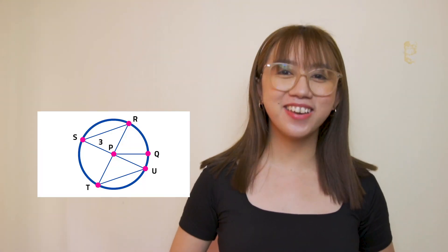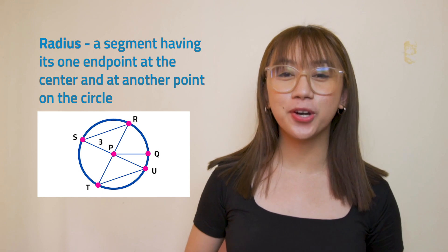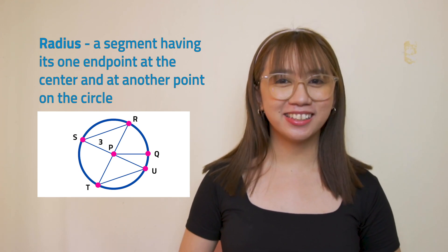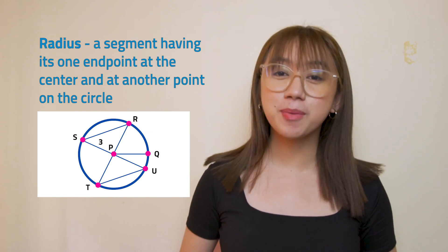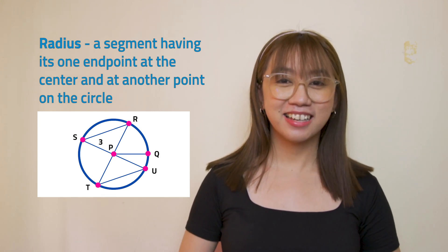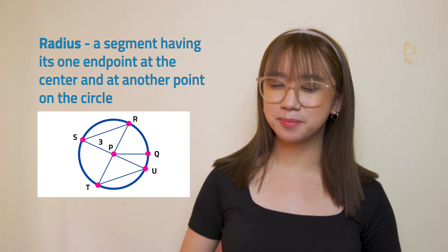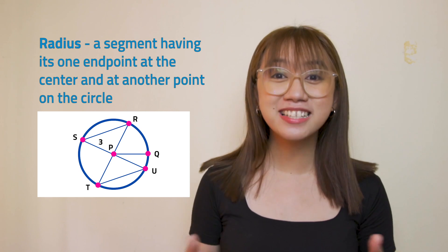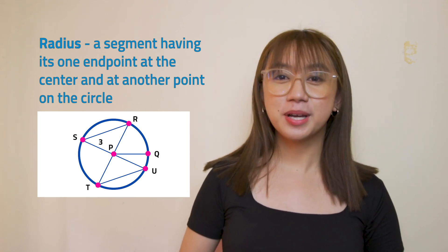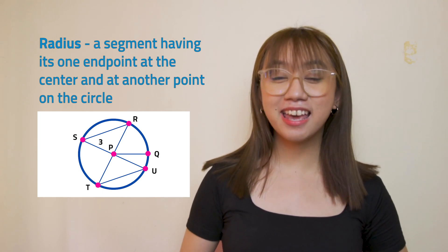First is the radius. It is a segment having its one endpoint at the center and at another point on the circle. The term radius may also refer to the length of this segment. Can you identify the radii in circle P? Fantastic! The radii are PQ, PR, PS, PT, and PU. Circle P has radius D.